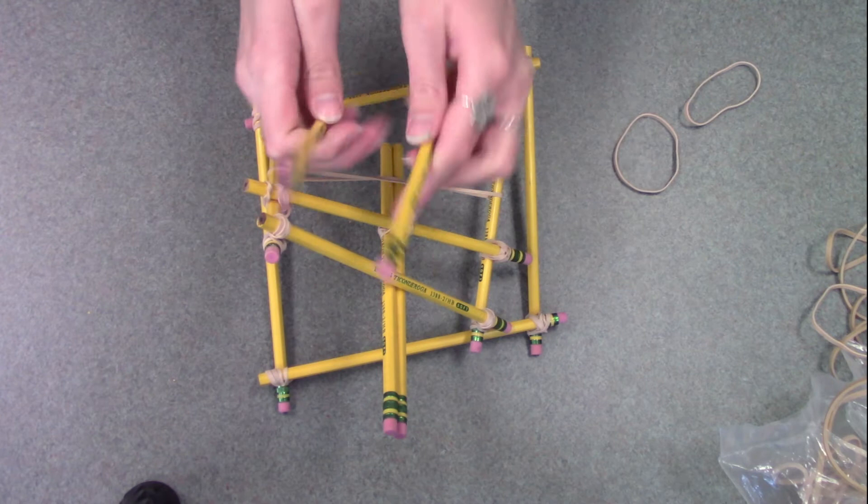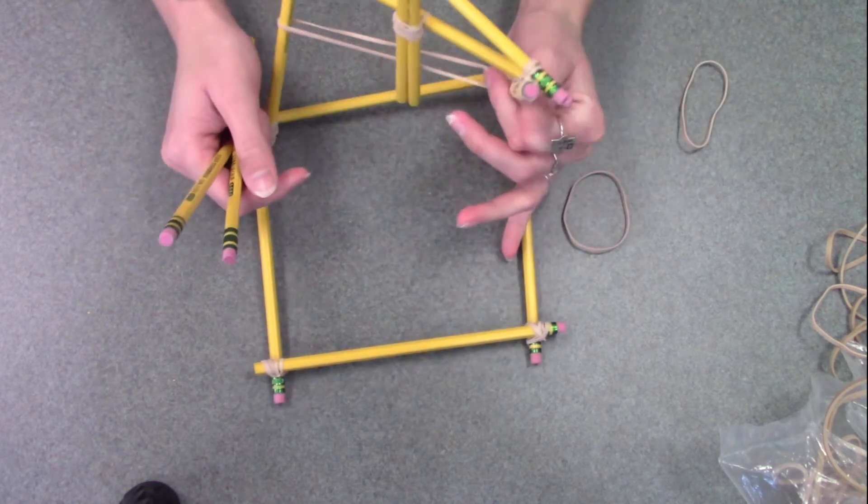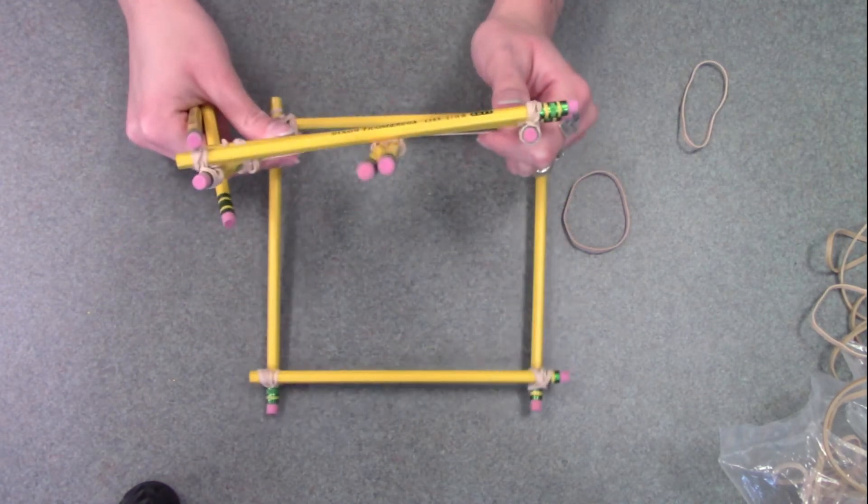And then you're going to take the last two pencils as well as two more rubber bands and stand up the front frame. It's going to be a little wonky because the rubber bands are pushing and pulling it all in different directions, but that's okay.